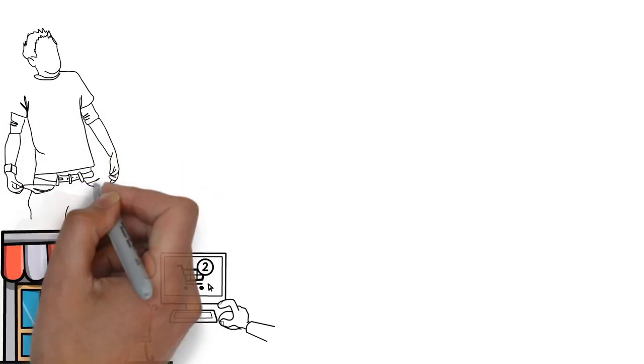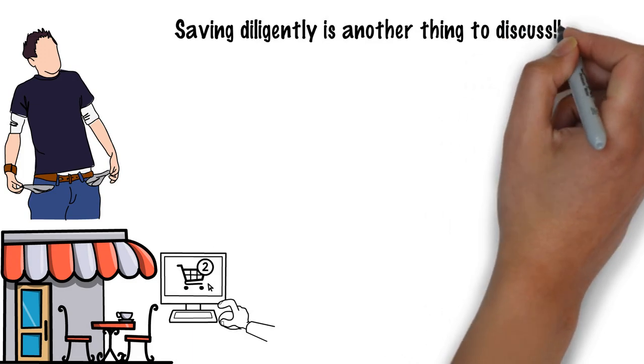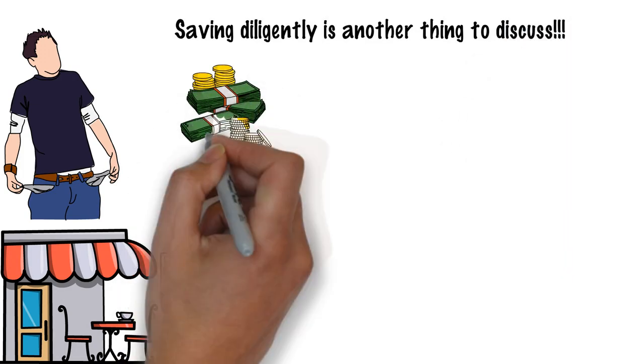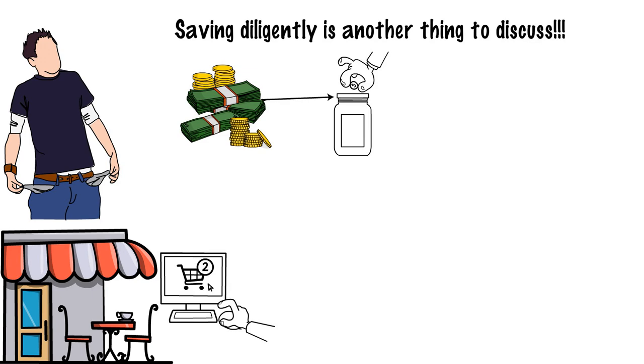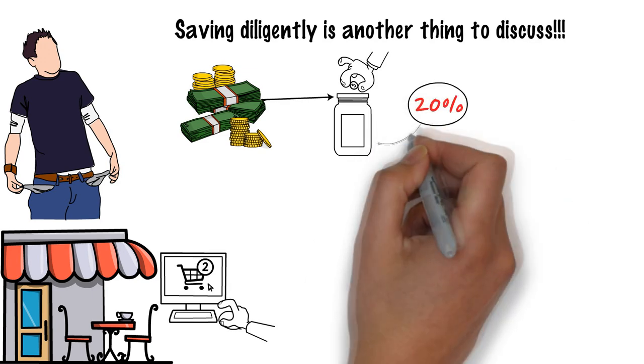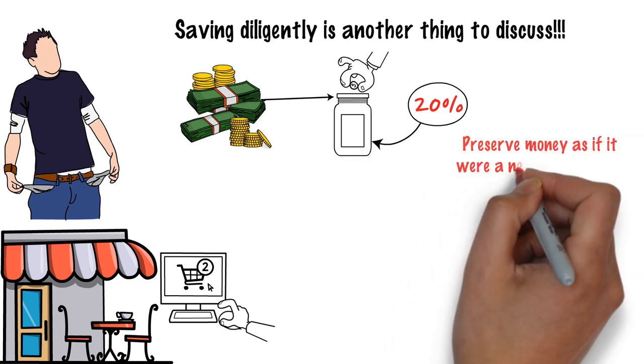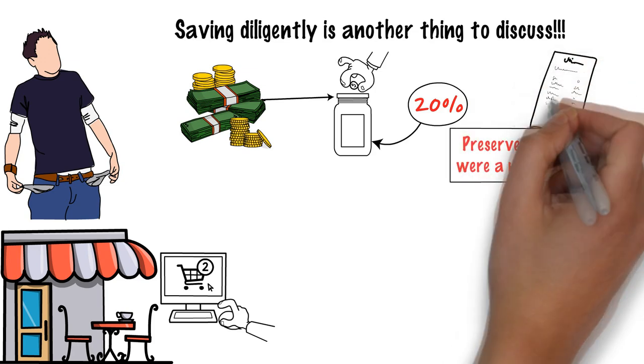Saving diligently is another thing to discuss. Individuals must continuously set aside a portion of their salary for savings. Simply having a budget is not enough. At least 20% of their earnings should go towards funds. The more you can conserve, the better. Preserve money as if it were a necessary expense, just like paying bills.